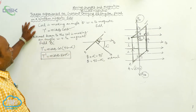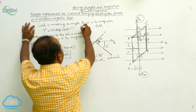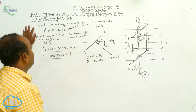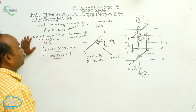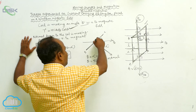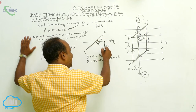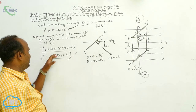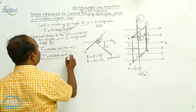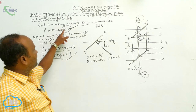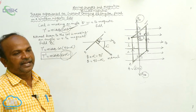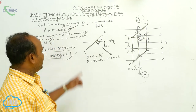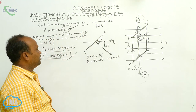Now, if the coil itself is making an angle theta with respect to the magnetic field, then the torque experienced by the coil is NIAB cos theta, where the cos function is involved. But if the normal drawn to the coil is making an angle alpha with respect to the magnetic field, then the torque is tau equal to NIAB sin alpha, where the sin function is involved.